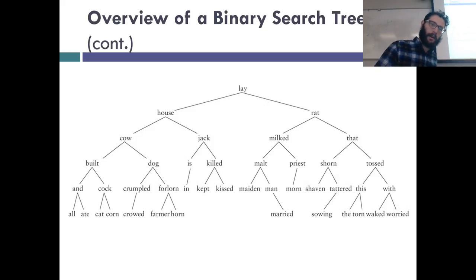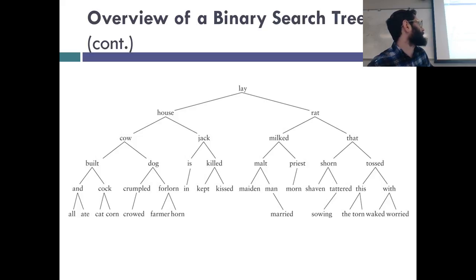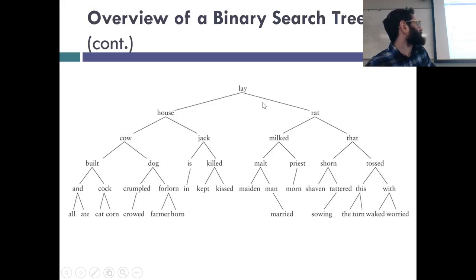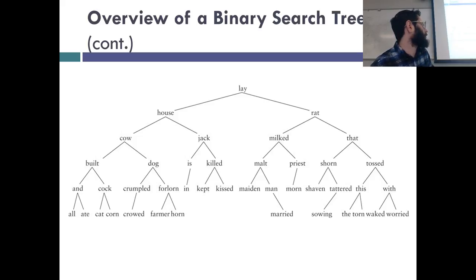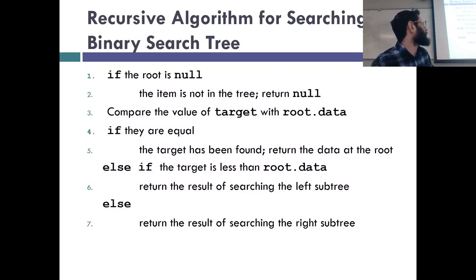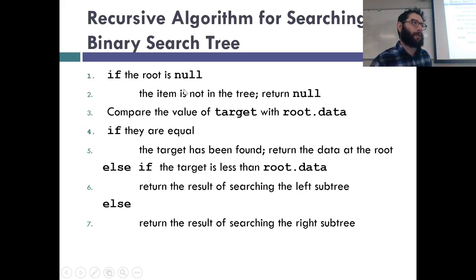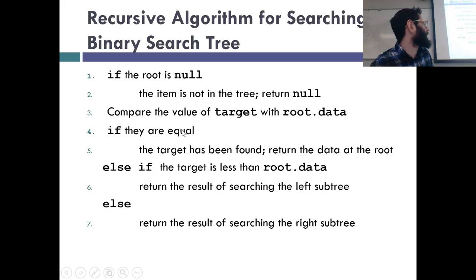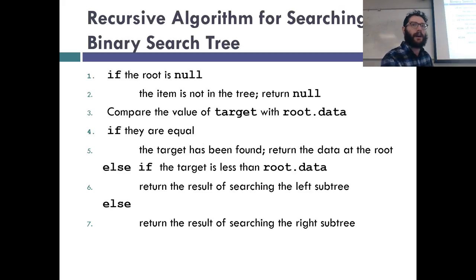I'll go over the algorithm here because it's been important, but I'm not going to actually put it up since I did that in the video. So here's a binary search tree for a bunch of strings — it's all in alphabetical order. The recursive algorithm for searching is the same algorithm used for add, move, and delete. If the node was null, you'd return false for contains. Otherwise, compare the value at root.data — if they're equal, return true; otherwise look left or right.